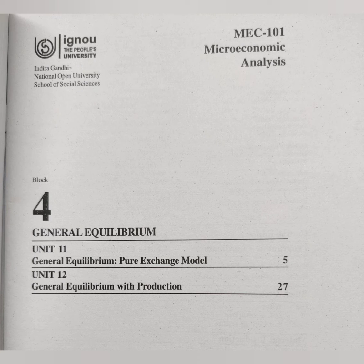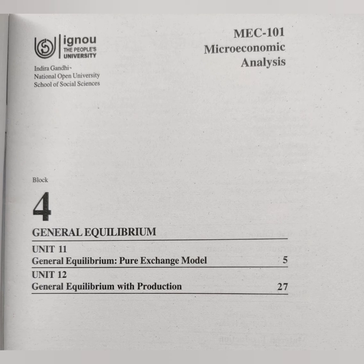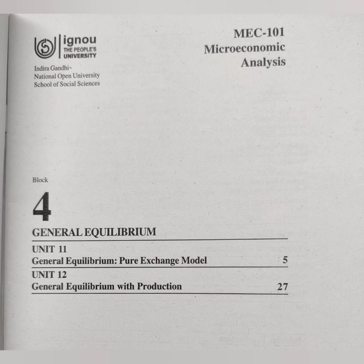Next, block 4 is general equilibrium. In blocks 1 and 2, we discussed partial equilibriums where we study how demand and supply conditions interact in a particular market to determine the price of a particular good. In this particular block, we will learn about general equilibrium analysis, which studies simultaneous equilibrium in all markets at the same time.